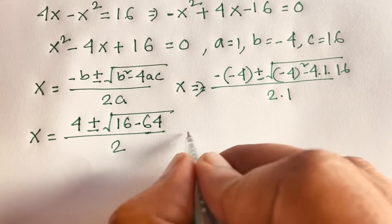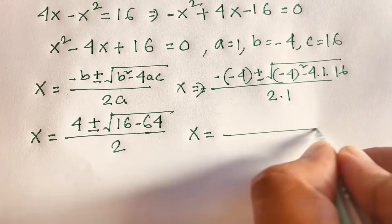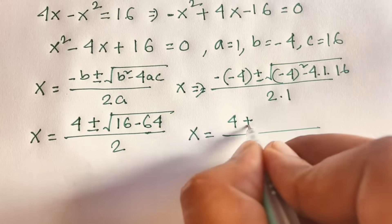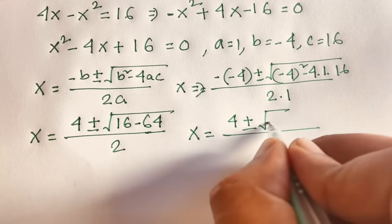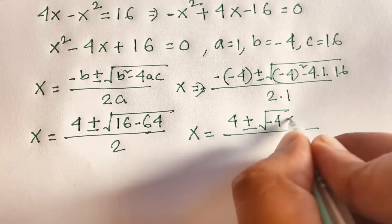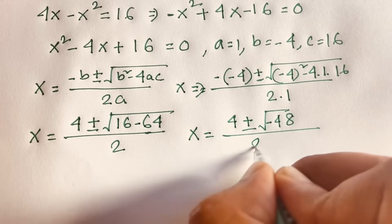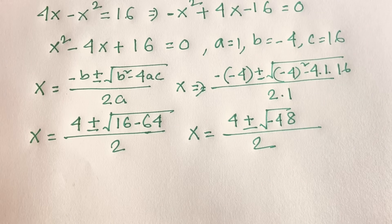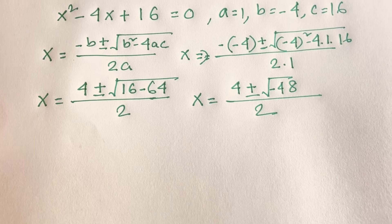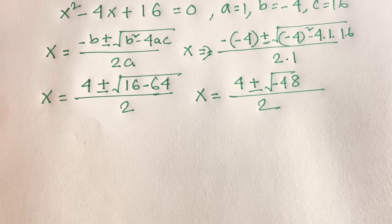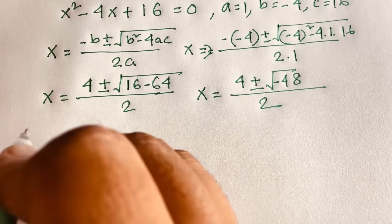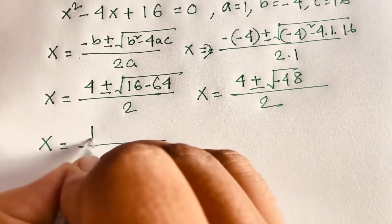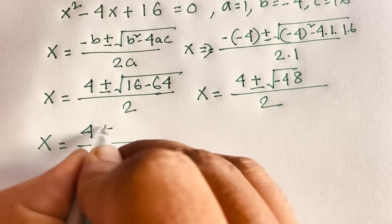16 minus 64 gives negative 48, so x equals 4 plus or minus the square root of negative 48, over 2.